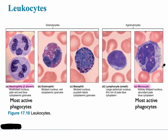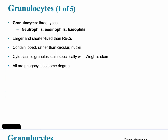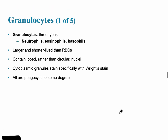This slide shows micrographs of various leukocytes. The granulocytes are shown here, and we can see the grainy appearance in the cytoplasm — the neutrophils, eosinophils, and basophils. The most common of all leukocytes are the neutrophils, and they along with the monocytes are the most active phagocytes. The agranulocytes shown here are the lymphocytes and the monocytes. All granulocytes are phagocytic to some degree, but neutrophils are the most phagocytic.